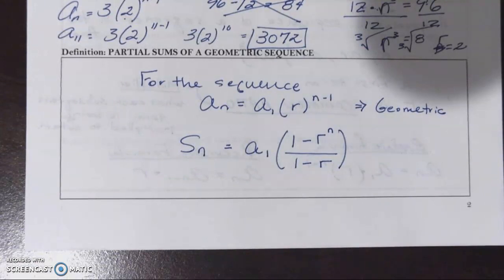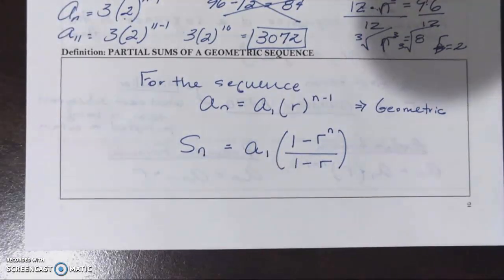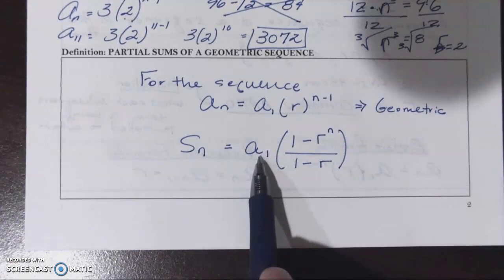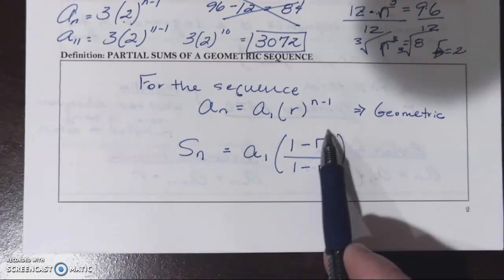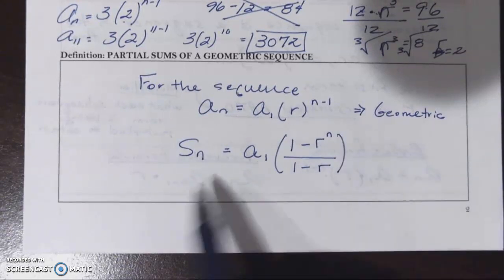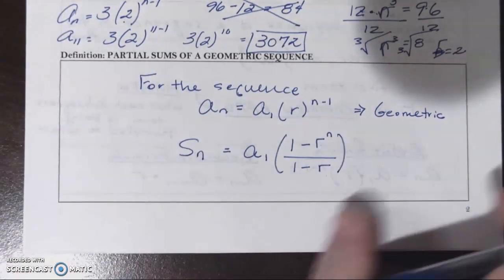This is a formula that will be given to you. Even if we were in the physical classroom we would provide this formula for you, so as long as you can find the first term, the common ratio, and how many terms we're looking for the sum of, we should be able to use our calculator and figure out that sum.